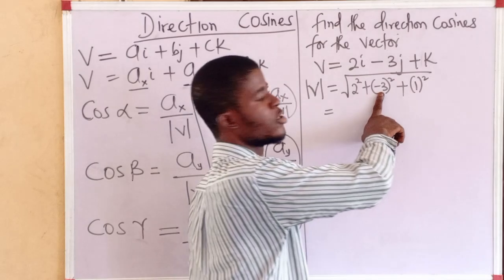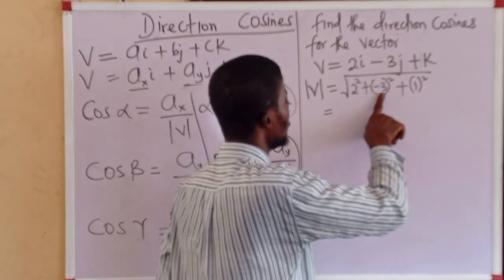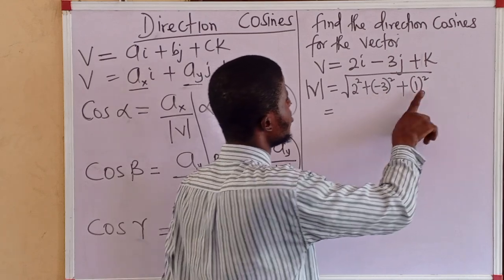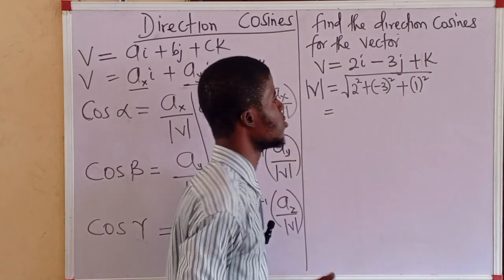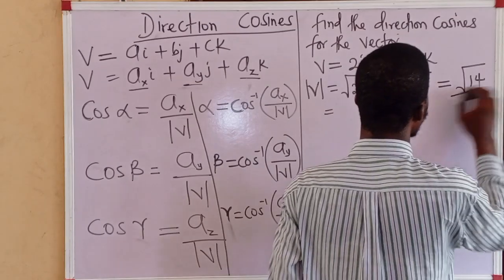2 squared is 4, this is 9, and this is 1. So, 4 plus 9 is 13, 13 plus 1 is 14. So, we have root 14 as the modulus of the vector.